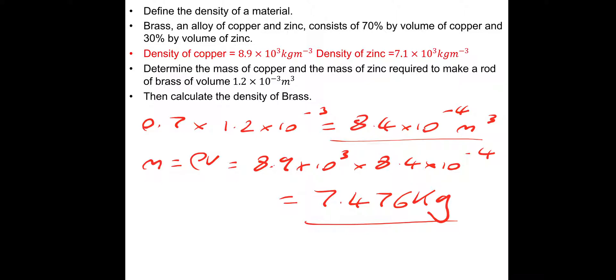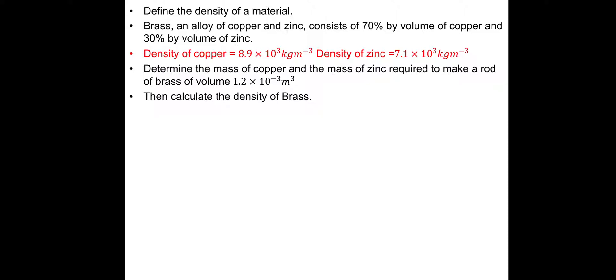If you want to make sure that's jotted down somewhere, if you didn't get that. And then we'll do zinc. Zinc is 30%. So, we need to do 30% of the volume. So, 0.3 times the volume, 1.2 times 10 to the minus 3, which gives us a volume of 3.6 times 10 to the minus 4 cubic meters. Then we need to get the mass, which is just density times volume. Density is 7.1 times 10 to the 3, which is 7,100 multiplied by the volume, 3.6 times 10 to the minus 4, which gives a mass of zinc of 2.556 kilograms.